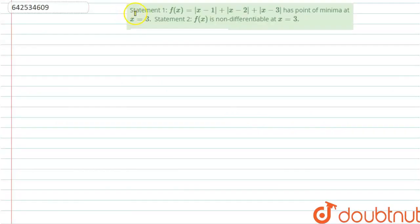Hello everyone, in this question we have two statements. Statement 1: f(x) is equal to |x-1| + |x-2| + |x-3| has a point of minima at x equals 3. Statement 2: f(x) is non-differentiable at x equals 3. Let's start and find out f(x) first in different regions.